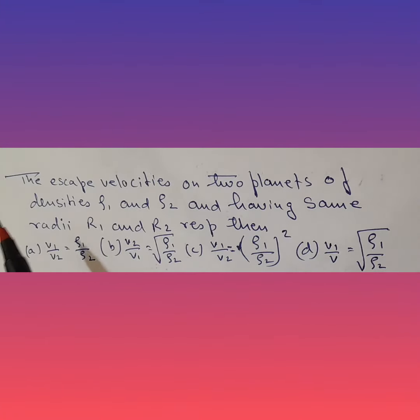Hey guys, let's try and solve this question. The escape velocities on two planets of densities ρ₁ and ρ₂ and having same radii R₁ and R₂ respectively. Then these are the options.